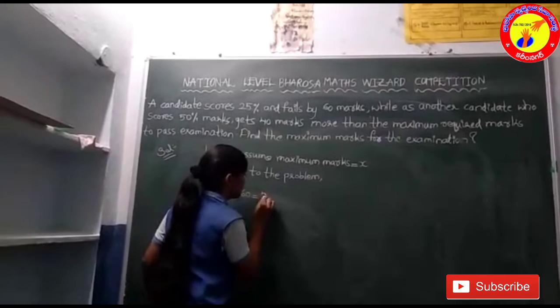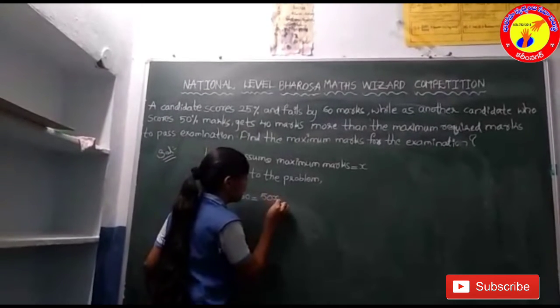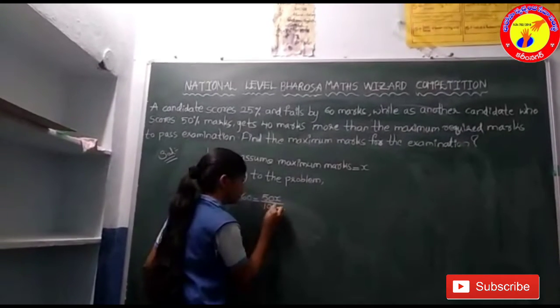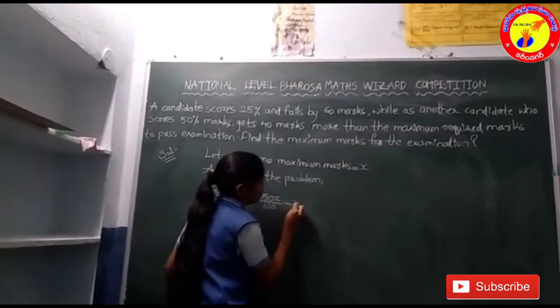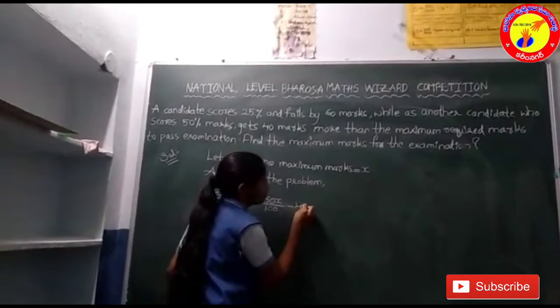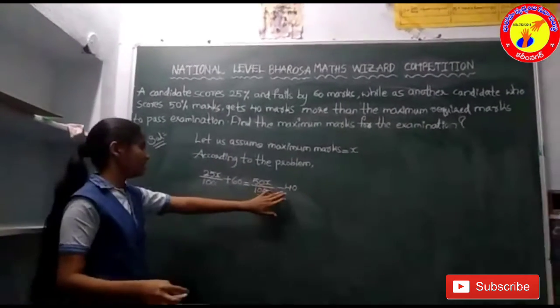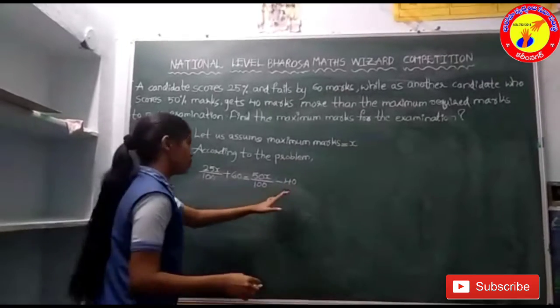The second candidate scores 50%, so the passing marks also equal 50X by 100 minus 40, because he got excess marks — that's why we have minus 40.